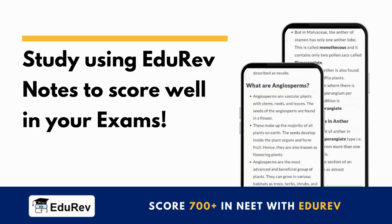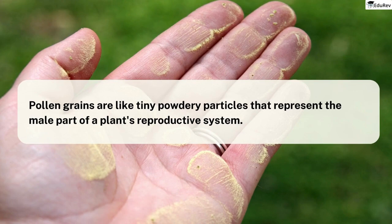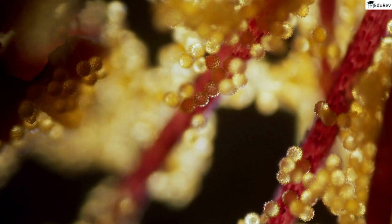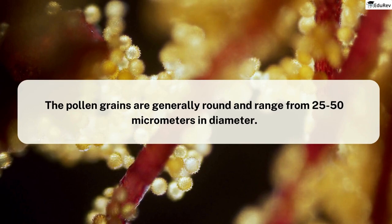Pollen grains are like tiny particles that represent the male part of a plant's reproductive system. You can actually see these pollen grains by touching the opened anthers of a flower and finding the yellowish powder on your fingers. If you look at them under a microscope, you'll see that they come in all sorts of sizes, shapes, and colors. The pollen grains are generally round and range from 25 to 50 micrometers in diameter.